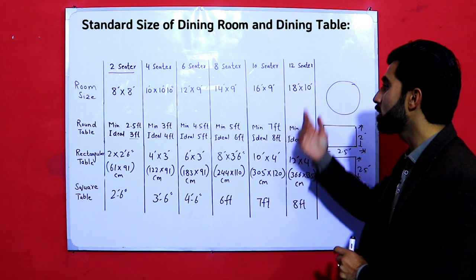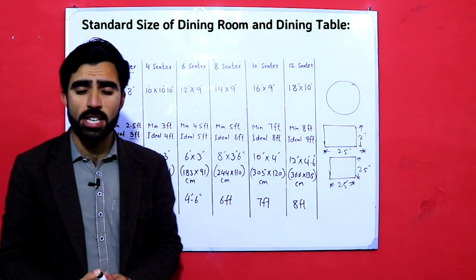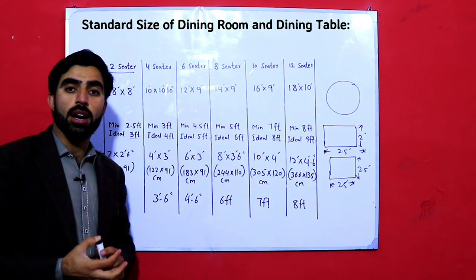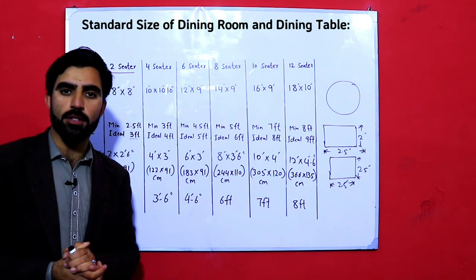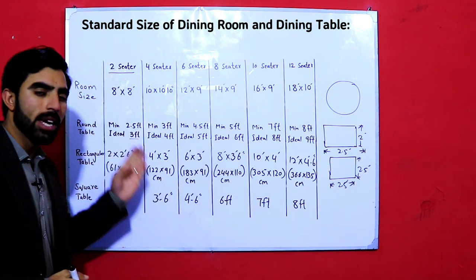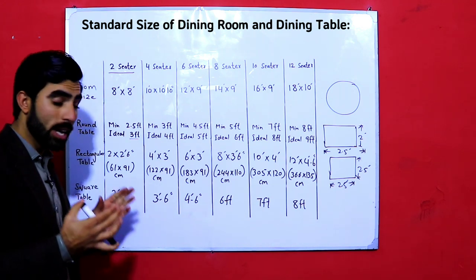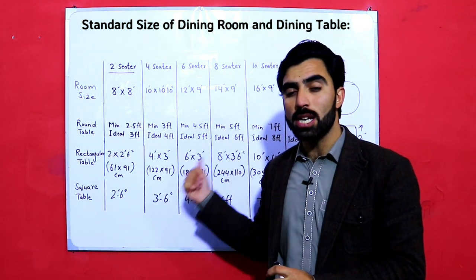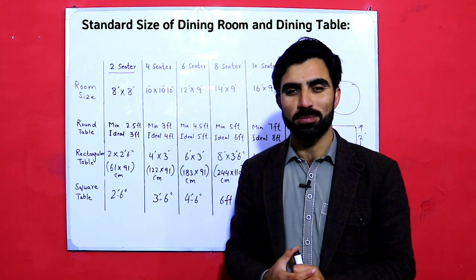It's important to know the standard size of dining room and dining table because many people don't know these dimensions. Before starting building construction, you should know the size of the dining room. Depending on whether you have four seats, five seats, or more, you can select the appropriate size from the standard data discussed. If you have any questions related to this topic, comment below. This video is also important for non-engineering and non-architecture people. Thanks for watching, see you in the next video, goodbye.